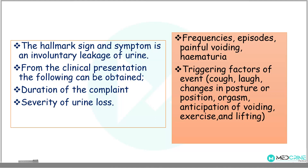The hallmark symptom in urinary incontinence is an involuntary leakage of urine. From the clinical presentation, you can obtain the duration and severity of urinary loss, the frequency of episodes of involuntary urinary leakage, painful urination, or presence of hematuria. You also need to identify the triggering factors — for example, cough, laughter, changes in posture, orgasm, anticipation of voiding, or lifting of heavy weights.